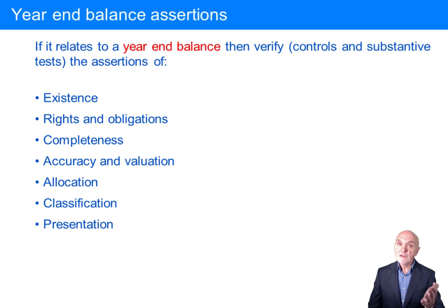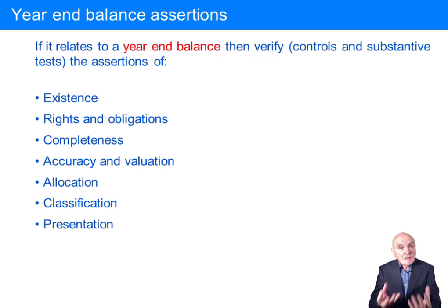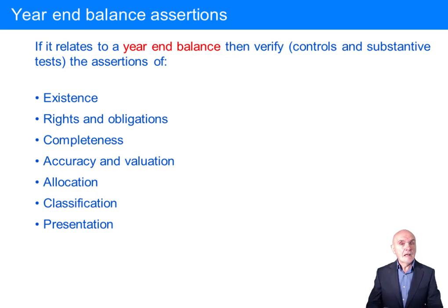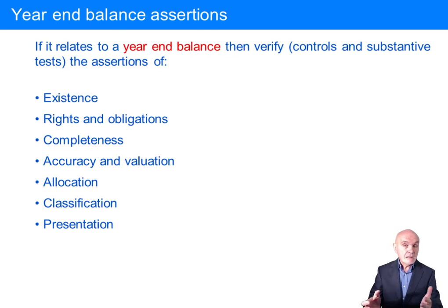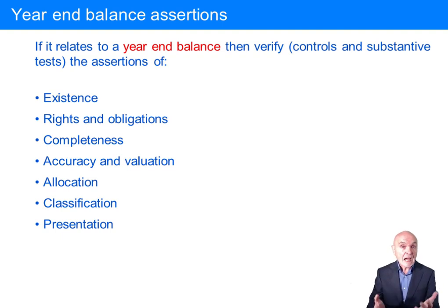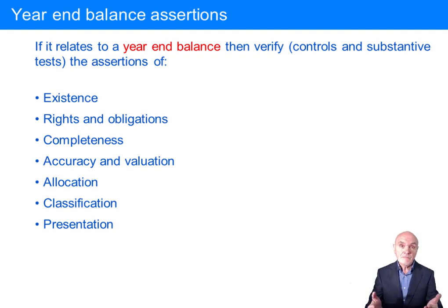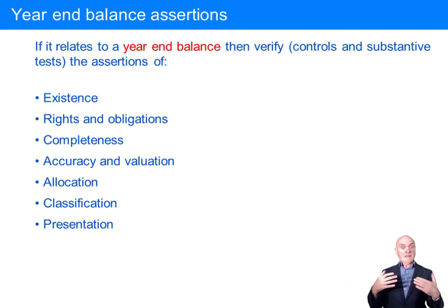Classification — for example, non-current assets, non-current liabilities and current liabilities, amounts due over one year versus less than one year. You would have to inspect the loan documents — when is the loan repaid? Because if you don't inspect the loan documents, how do you know the classification is right? So every one of these assertions requires evidence.